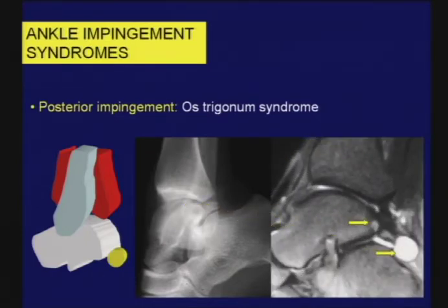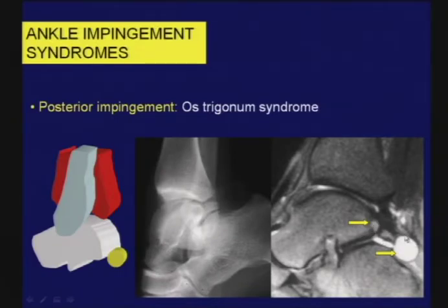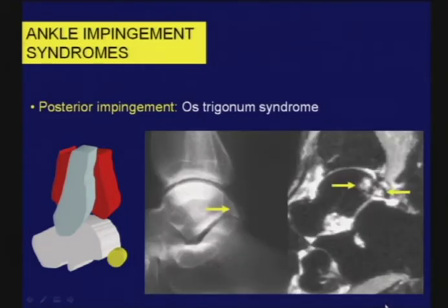On MR imaging, there are a number of findings we may see, but I'm not sure any of them are specific. Probably the best finding is edematous changes present within the os itself and in the subjacent talus. In one case, it was associated with a synovial cyst. Note also osteophytes on the anteromedial aspect of the talus, suggestive of anterior impingement. Here's another example with very similar findings — a small triangular os trigonum but extensive cystic abnormalities evident on the STIR sequence.